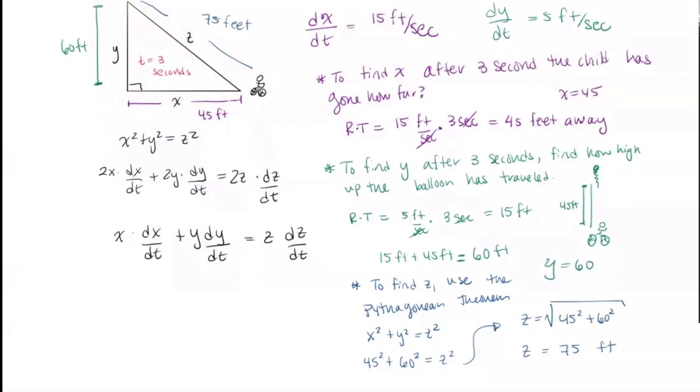So now we can pop everything we know in here. So X we have is 45. dX/dt is 15. Plus Y. Y is 60. And then finally, dY/dt is five. And the last piece of information we just found is that Z is equal to 75. So that's going to go on the other side of the equal sign times dZ/dt. So again, we can do some algebra here.